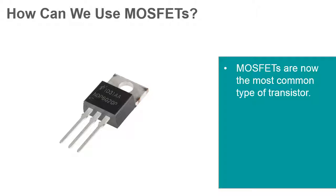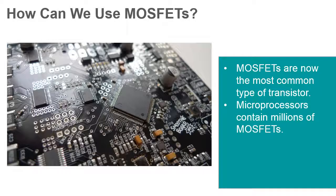At one time, the bipolar junction transistor was more common than the MOSFET, but things have changed and MOSFET applications now far outnumber those of BJTs. Microprocessors contain millions of integrated MOSFET transistors on each device. The MOSFET devices provide the switching functions to operate logic gates and the data storage required by the microprocessor.